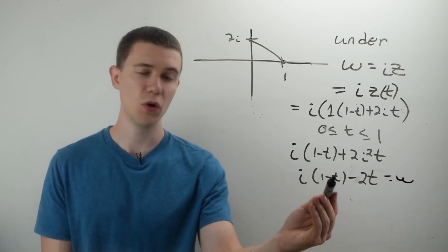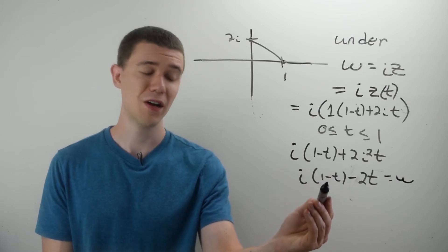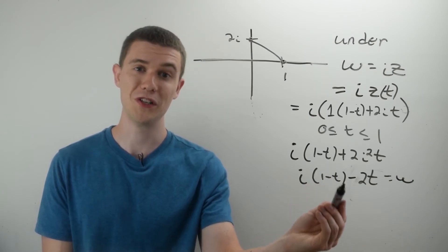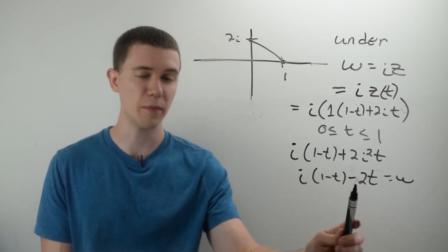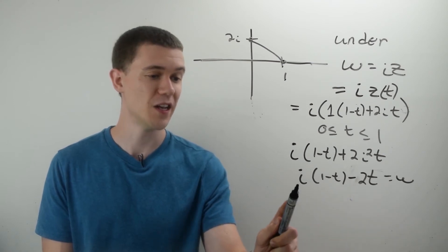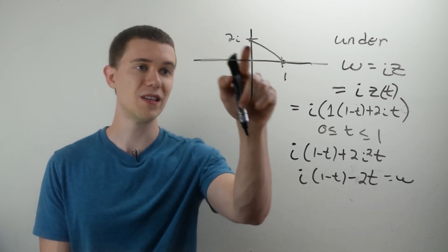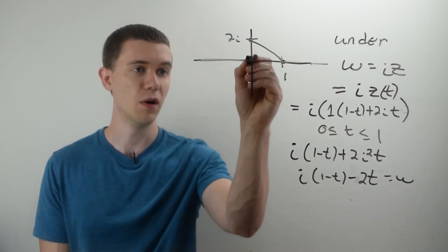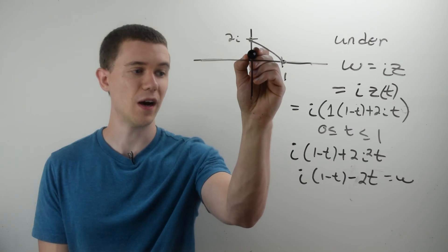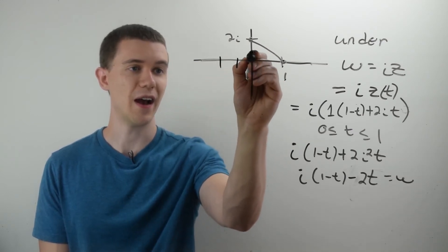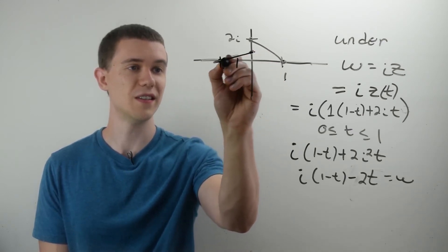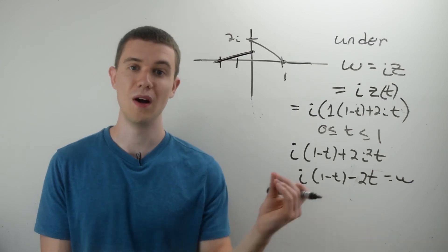Well, what is this? This looks awfully familiar to the parameterization of a line we just did. So this is actually a parameterization of a line segment, starting at i, and then ending at minus 2. So the image of this line segment under W will start at 1i and then end at negative 2. So this is the image under W of this function.